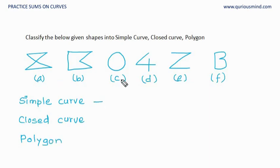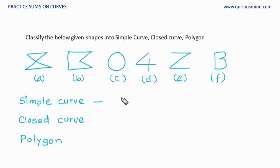Let's look at each figure to see if it is a simple curve. Figure A crosses over — is it a curve? Yes, because I can draw this without lifting the pen. But it crosses over, so it is not a simple curve. What about B? Is it a curve? Yes, and it does not cross, so B is a simple curve. What about C? I can draw this without lifting the pen and it does not cross over, so C is a simple curve.